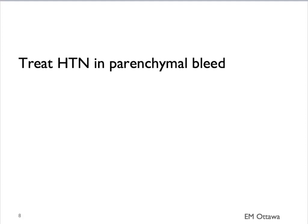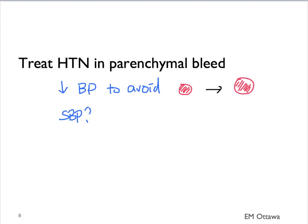There is one caveat in patients with a parenchymal bleed. If the parenchymal bleed is caused by hypertension, we would want to decrease the blood pressure to decrease the hematoma expansion. Different studies suggest different guidelines for the target systolic blood pressure — it is best to discuss it with your attending physician and your consultants. In this group of patients, we still want to avoid hypotension.